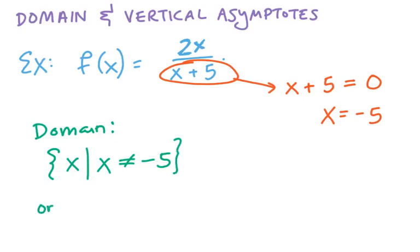For my interval folks, we need to express all real numbers but negative 5. So we start at the smallest number imaginable, we butt right up against negative 5, but we jump over it, and then we continue to the biggest number possible. So that would be the interval notation for the domain.